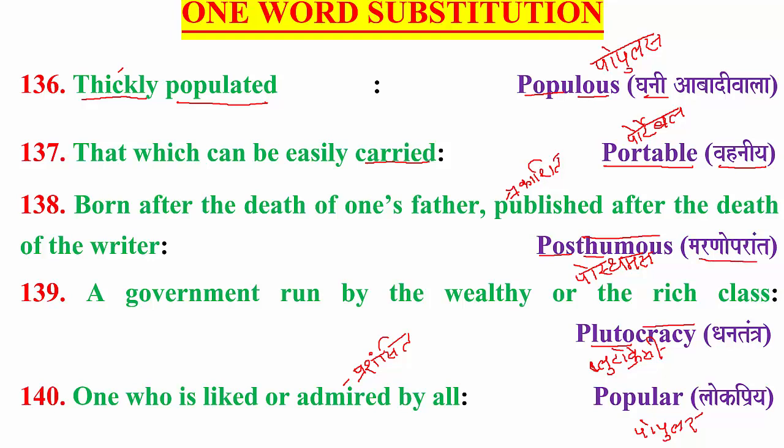Posthumous means 'marnoparant'. There are two groups of meaning for posthumous: the first is 'born after the death of one's father', and the second is 'published after the death of the writer'. In Hindi, if a child is born after the father's death, we say the child is a posthumous birth. Similarly, if a writer writes a book and it is in the process of being published, but the writer dies before publication, then the book that gets published is called a posthumous publication.